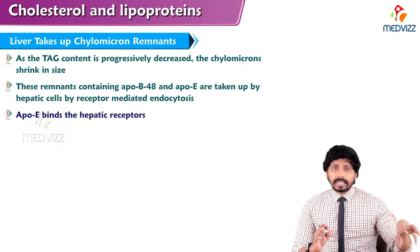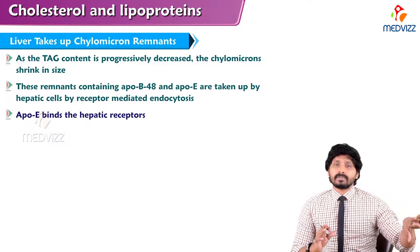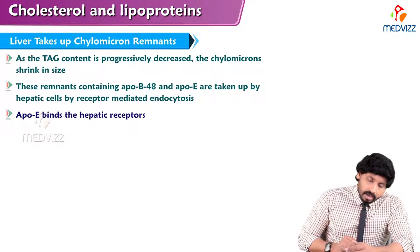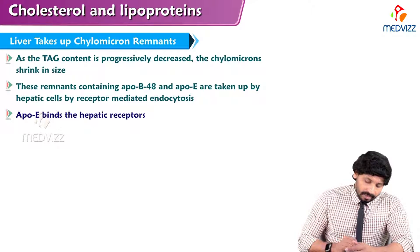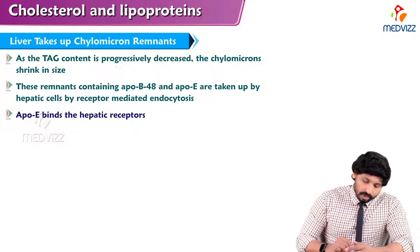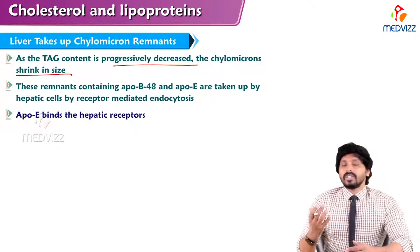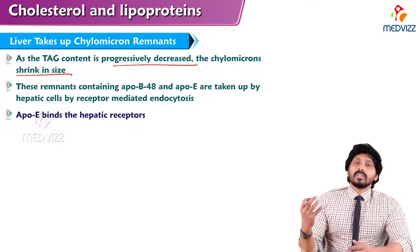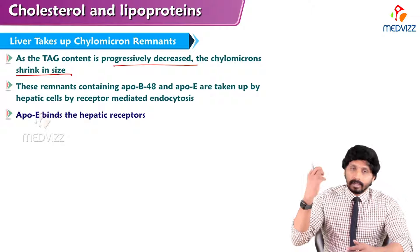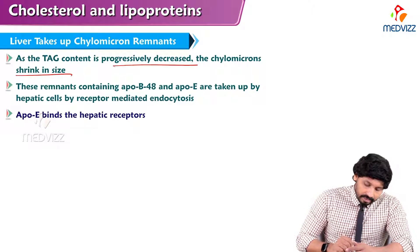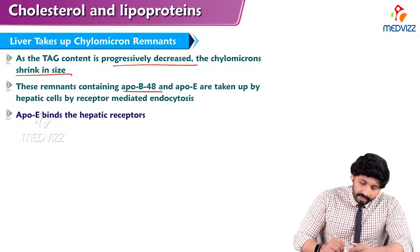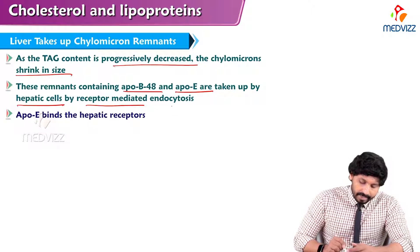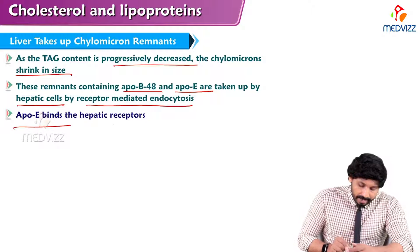After dumping all the triglyceride content at skeletal muscles, cardiac muscles, and adipose tissue, the remnant chylomicron remains. As the triglyceride content is progressively decreased, the chylomicron shrinks in size — initially when it is rich in triglycerides it is large, and once the triglyceride content decreases it becomes smaller. These remnants, containing ApoB48 and ApoE, are taken up by hepatic cells by receptor-mediated endocytosis. ApoE binds to hepatic receptors.